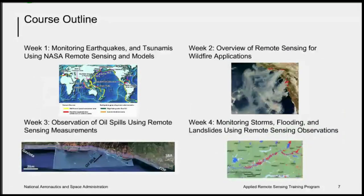Our course will consist of four sessions over four weeks — two sessions a day over four weeks. Week one is monitoring of earthquakes, tsunamis, and volcanoes using NASA remote sensing data and models. Week two will be an overview of remote sensing for wildfire. Week three will be the observation of oil spills using remote sensing measurements. And week four will be the monitoring of storms, flooding, and landslides using remote sensing observations.